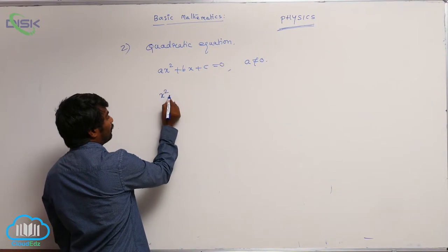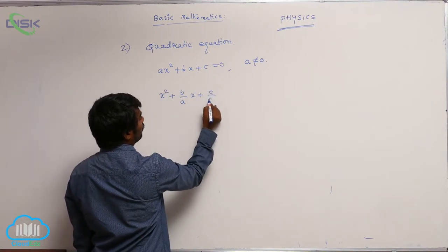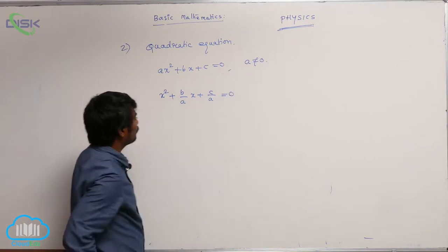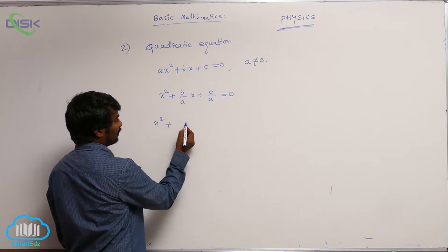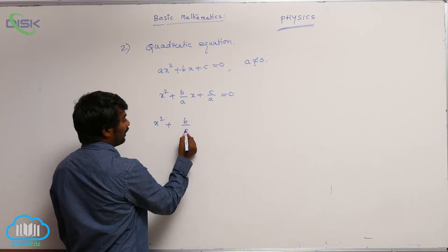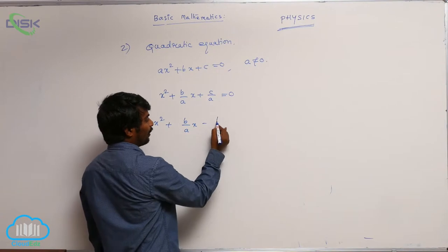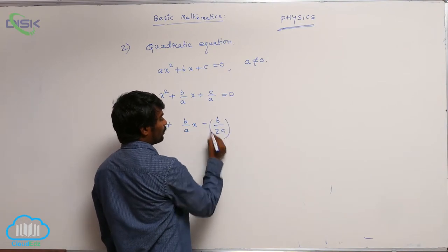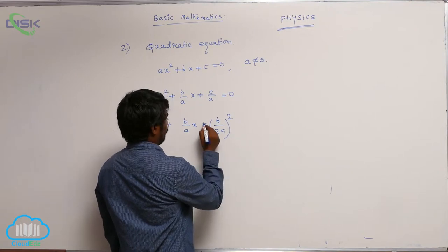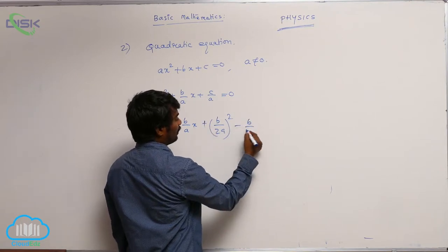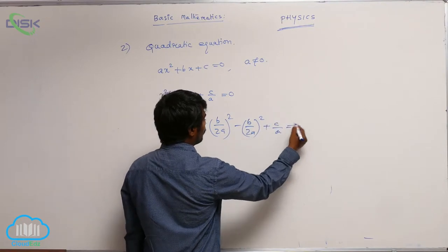We start with x squared plus B by A times x plus C by A equals 0. I am rewriting this as: x squared plus B by A times x plus B by 2A whole square minus B by 2A whole square plus C by A equals 0.